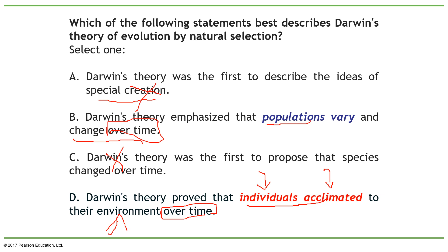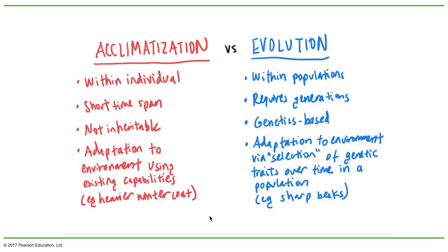Based on this, the answer is B. Now let me explain the difference between acclimation and evolution. Here I have these two definitions — acclimation and evolution — and I'm comparing them. Acclimation mainly occurs within individuals, while evolution mainly occurs within populations.